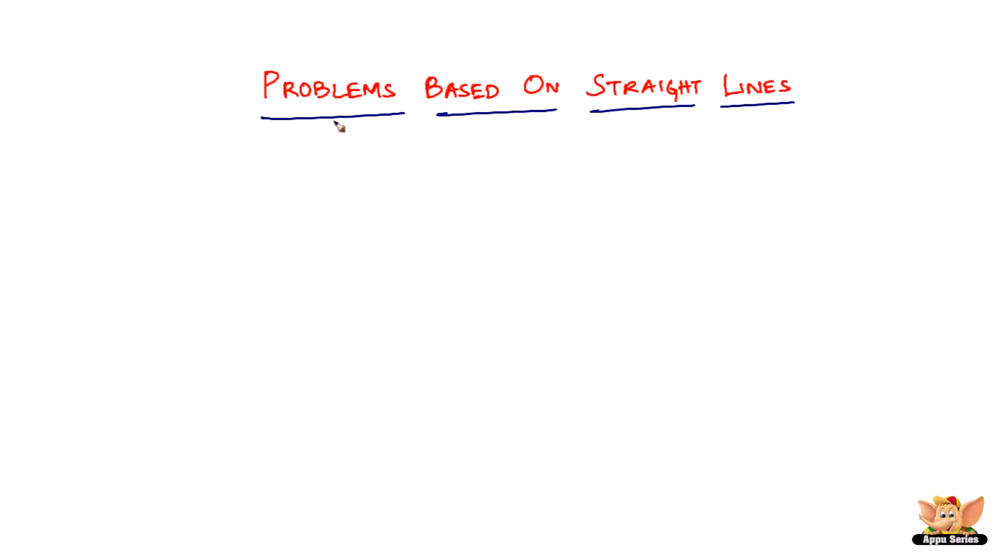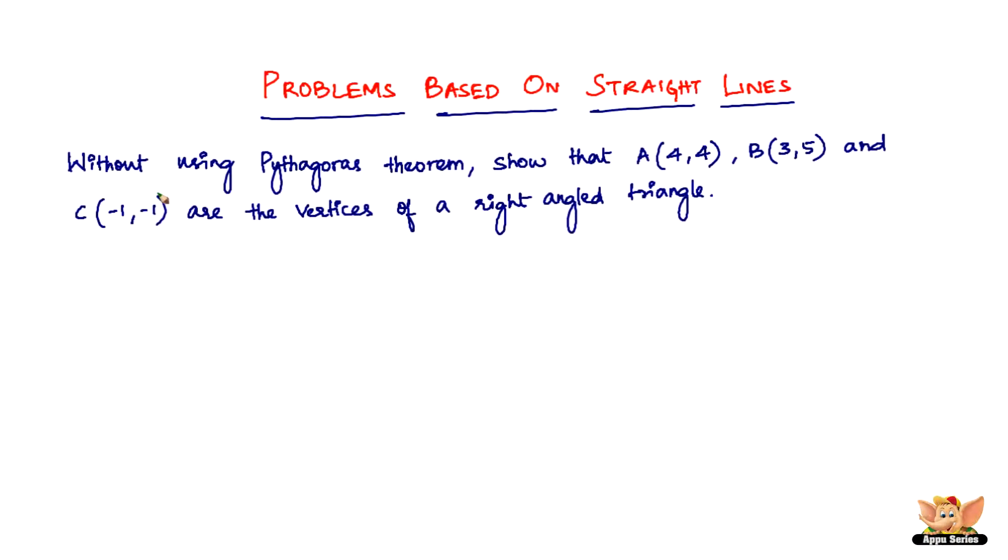In this video, let us continue to solve more problems based on straight lines. Here we've got the problem which reads like this. It says, without using Pythagoras theorem, show that A(4,4), B(3,5), and C(-1,-1) are the vertices of a right-angled triangle.